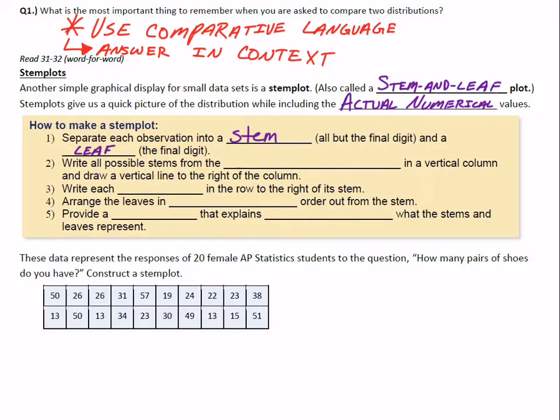Step 2: write all possible stems from the smallest to largest in a vertical column, and draw a vertical line to the right of the column. Step 3: write each leaf in the row to the right of its stem, and make sure they're arranged in increasing order out from the stem.